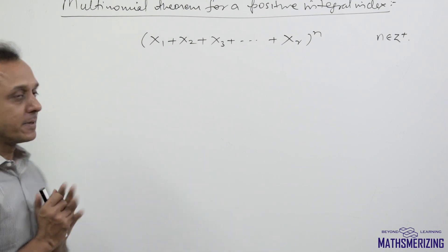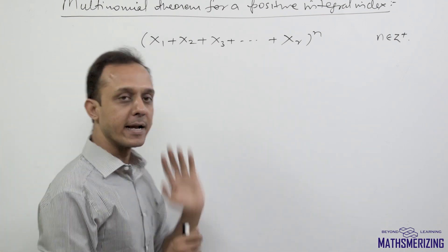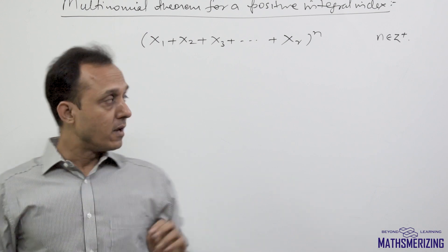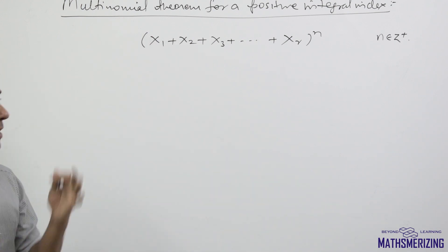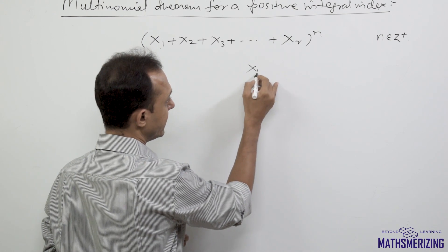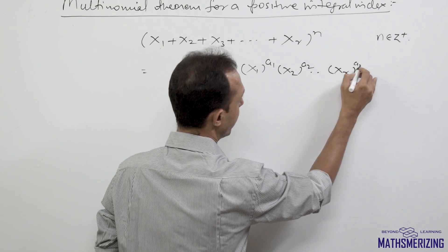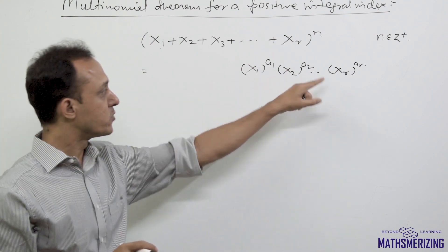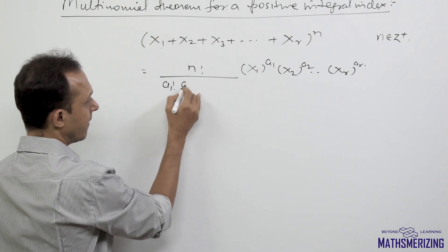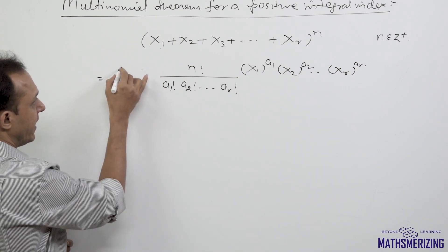After binomial theorem, the next obvious step is multinomial theorem. In multinomial, we'll have terms like x1 plus x2 plus x3 plus xr to the power n, where n is a positive integral index. The general expansion for multinomial theorem is expressed as x1 to the power a1, x2 to the power a2, and xr to the power ar. The coefficient of this term is written as factorial n divided by factorial a1, factorial a2, and factorial ar.